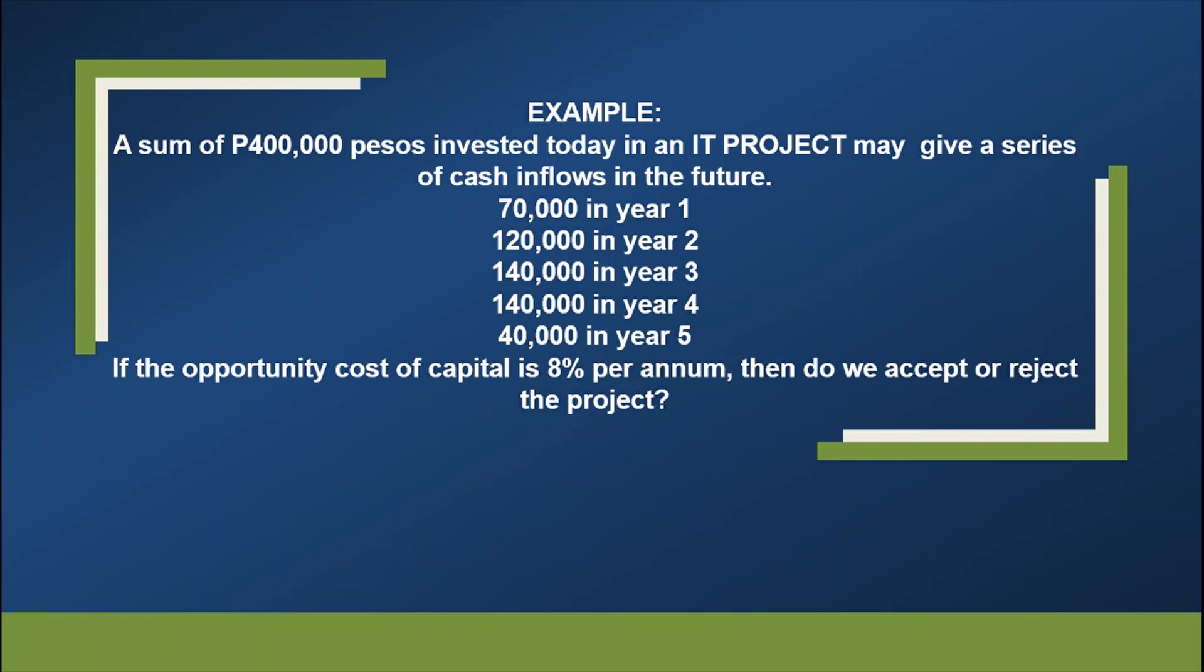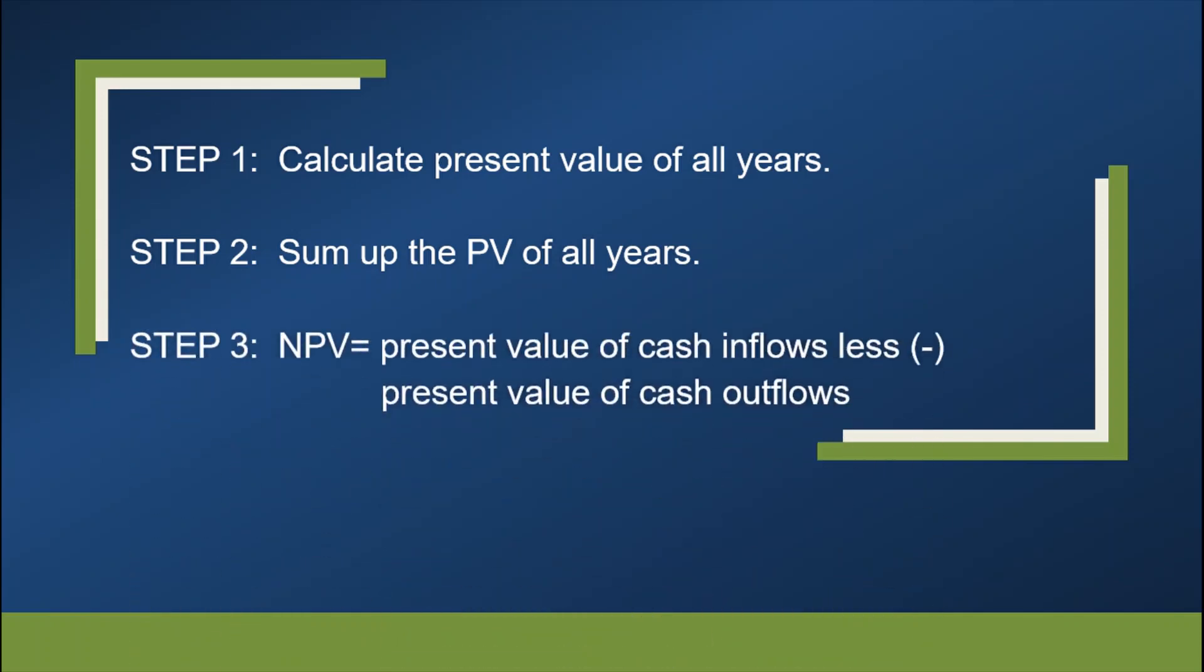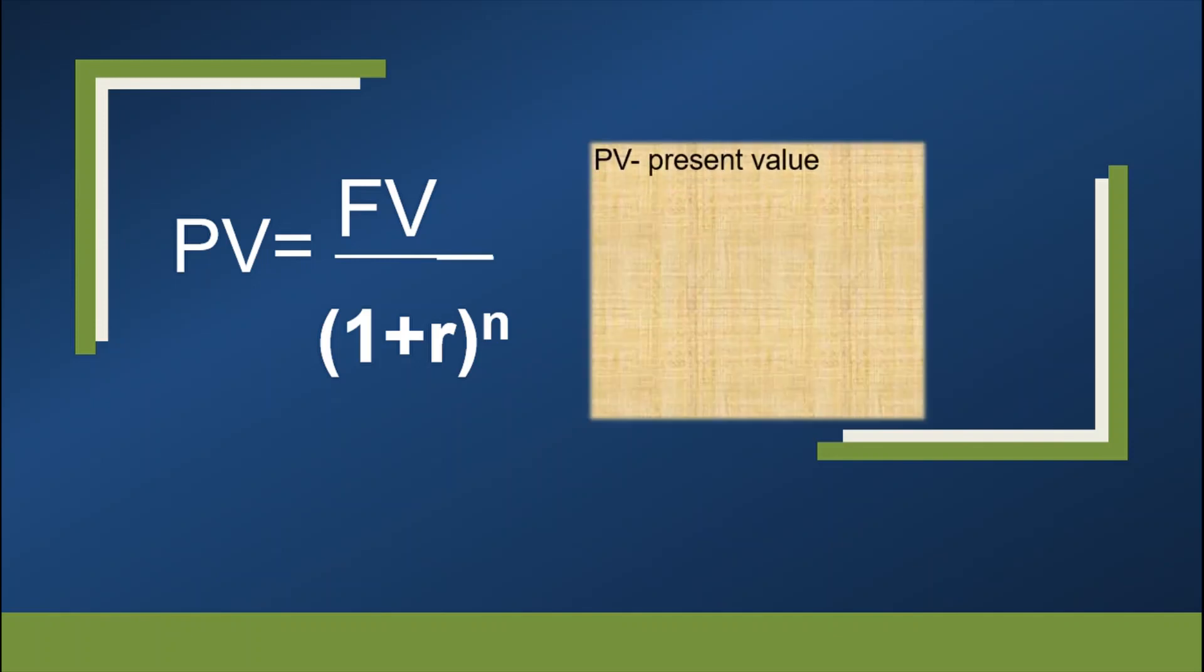By looking at the example, we cannot tell unless we compute it. Step 1, calculate present value of all years. Step 2, sum up the PV or the present value of all years. And step 3, find the difference of present value of cash inflows less present value of cash outflows. So remember this formula: PV is equal to FV divided by 1 plus R raised to the power of N.